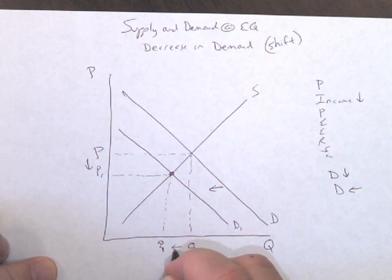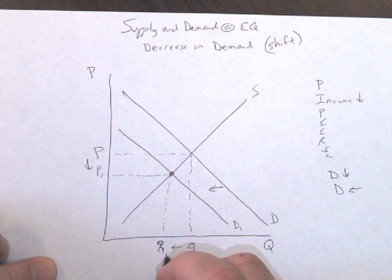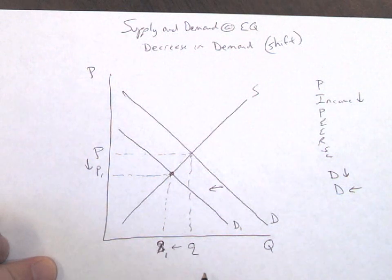So now I go from Q, sorry that's supposed to be a Q, and a one. I go from Q to Q1. I promise that's a Q.